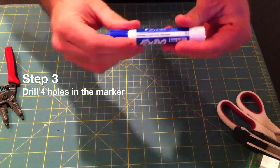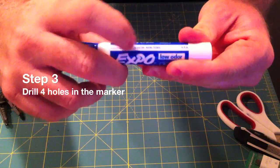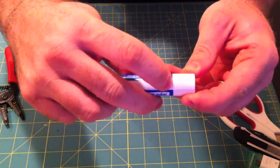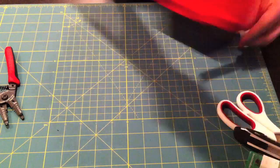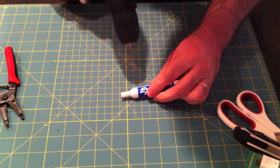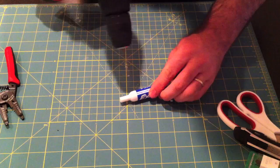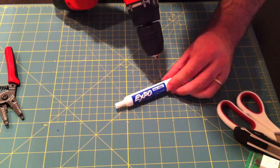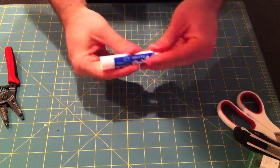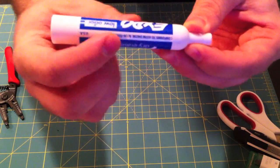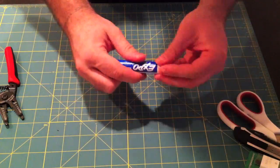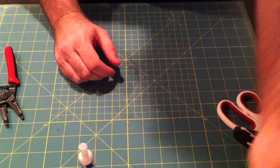We're going to be drilling four holes in the marker, two on one side, and two on the other. There we go, nice and clean, two in the front, two in the back, and we're ready to put the wire inside.